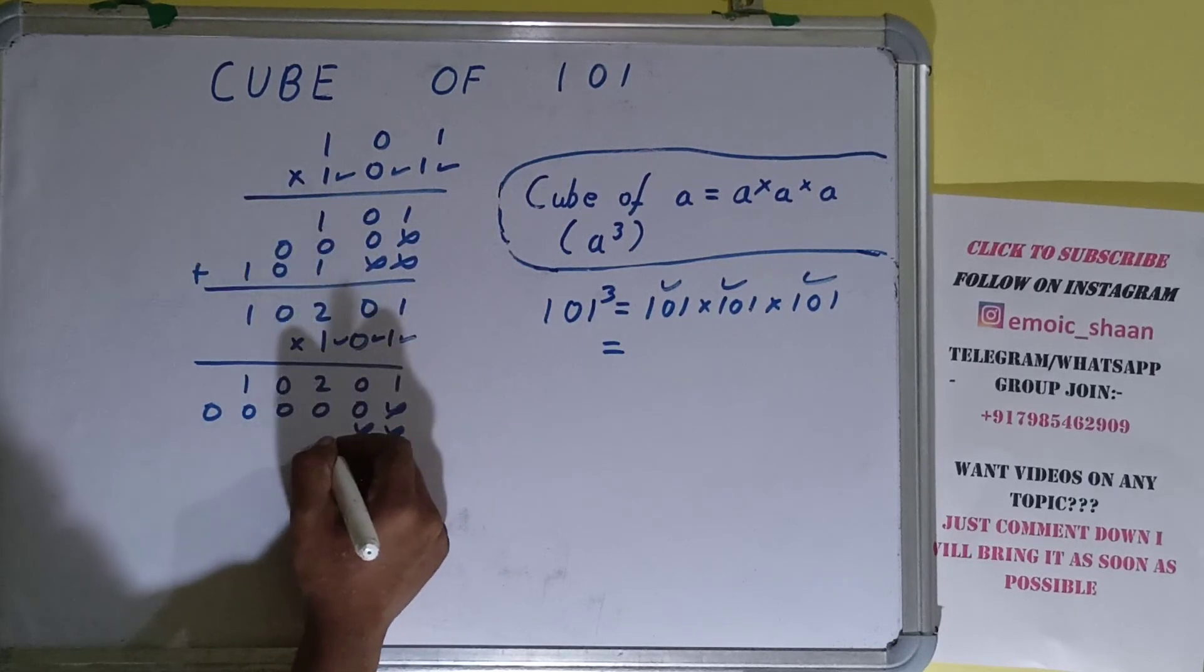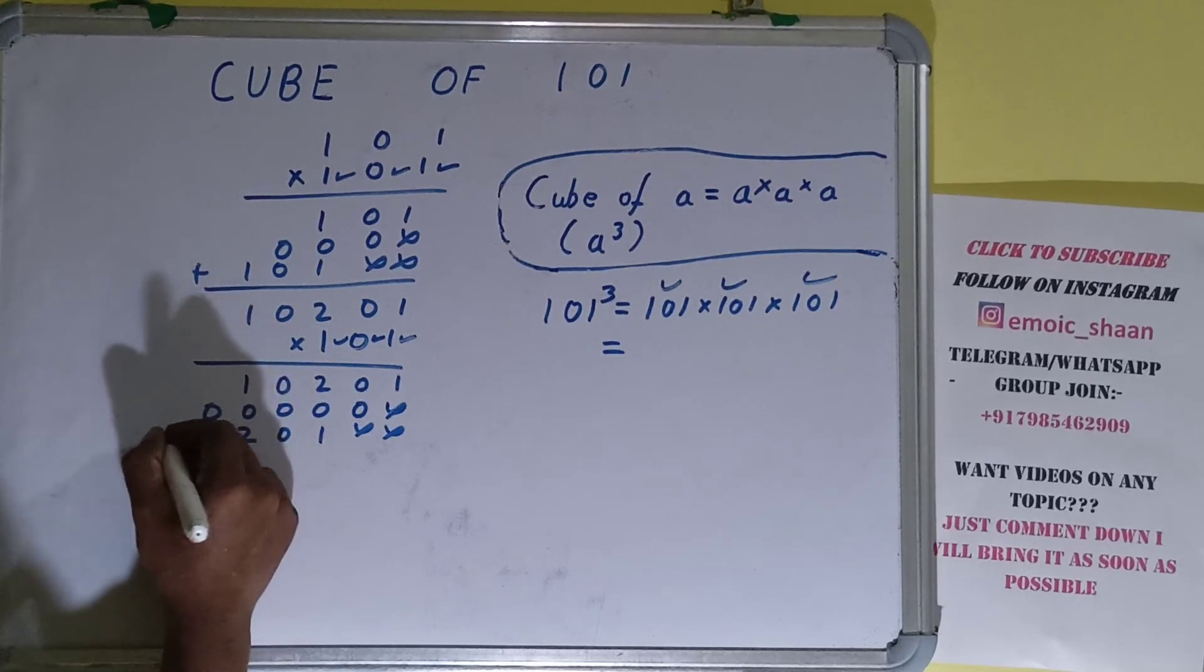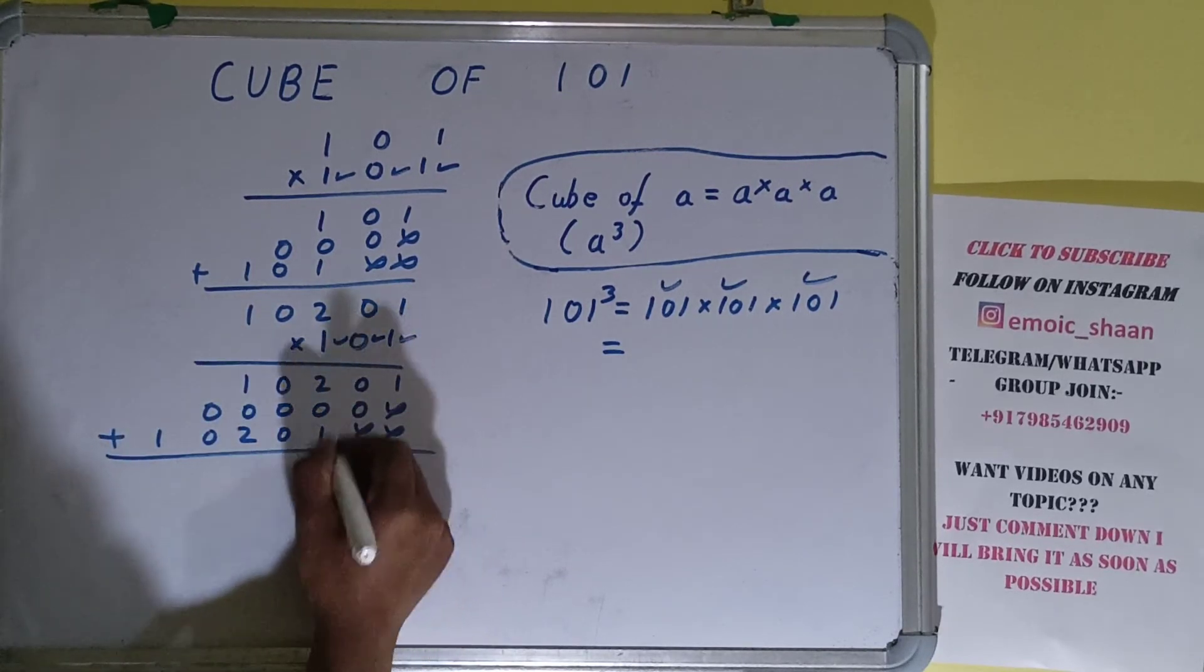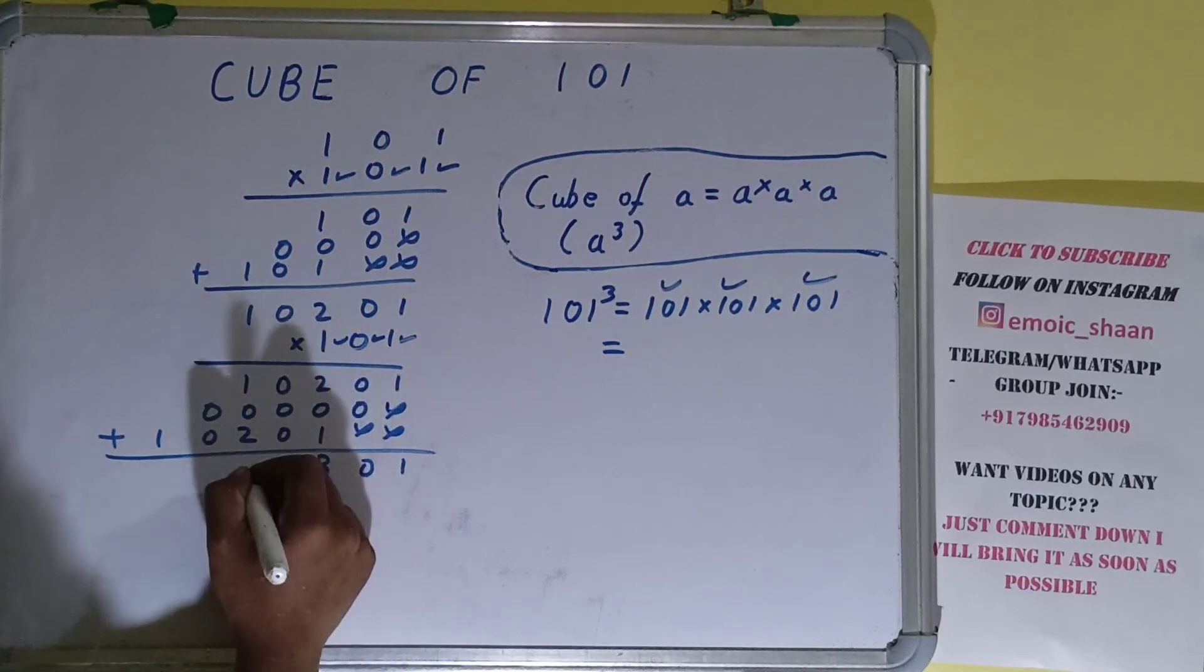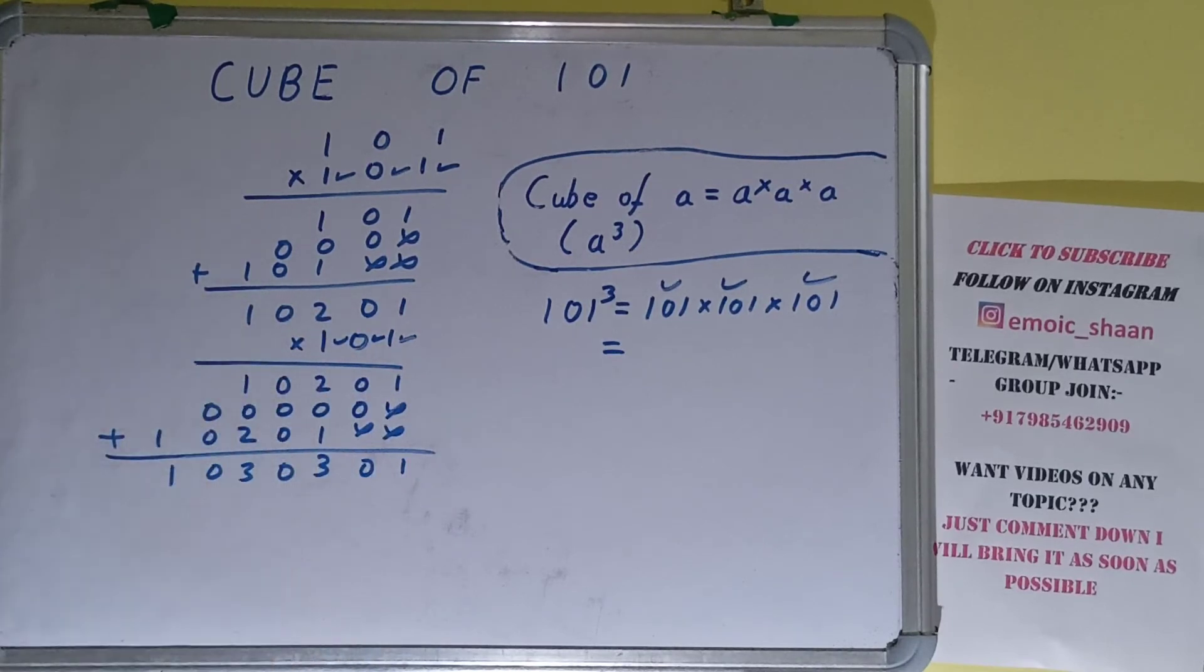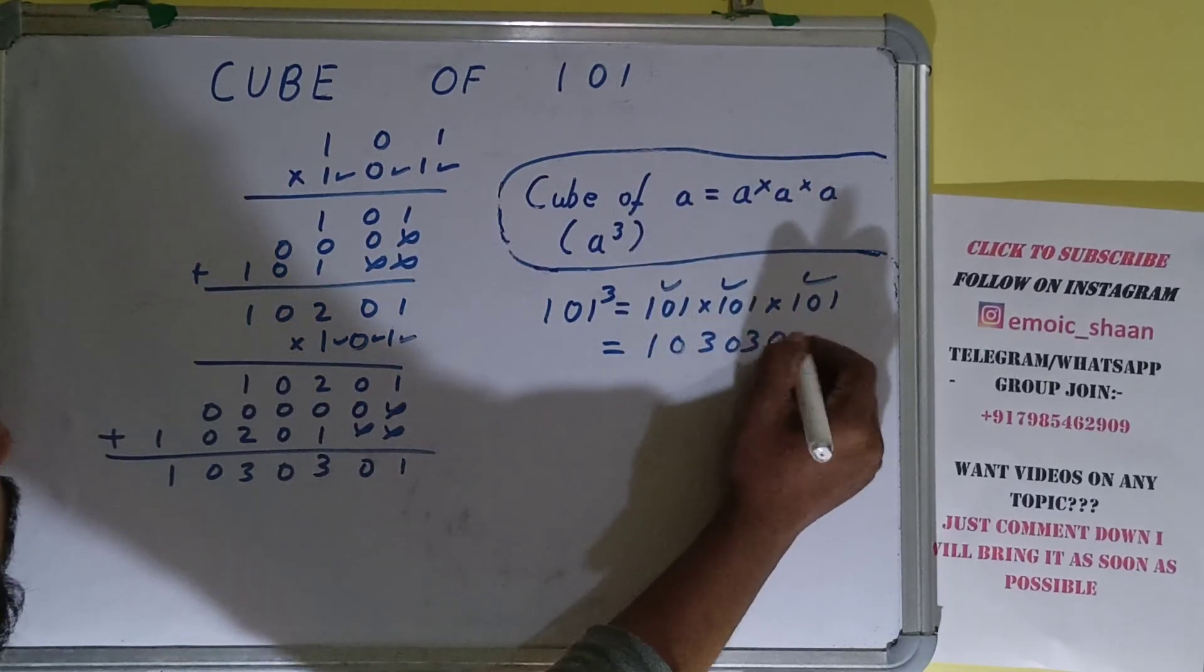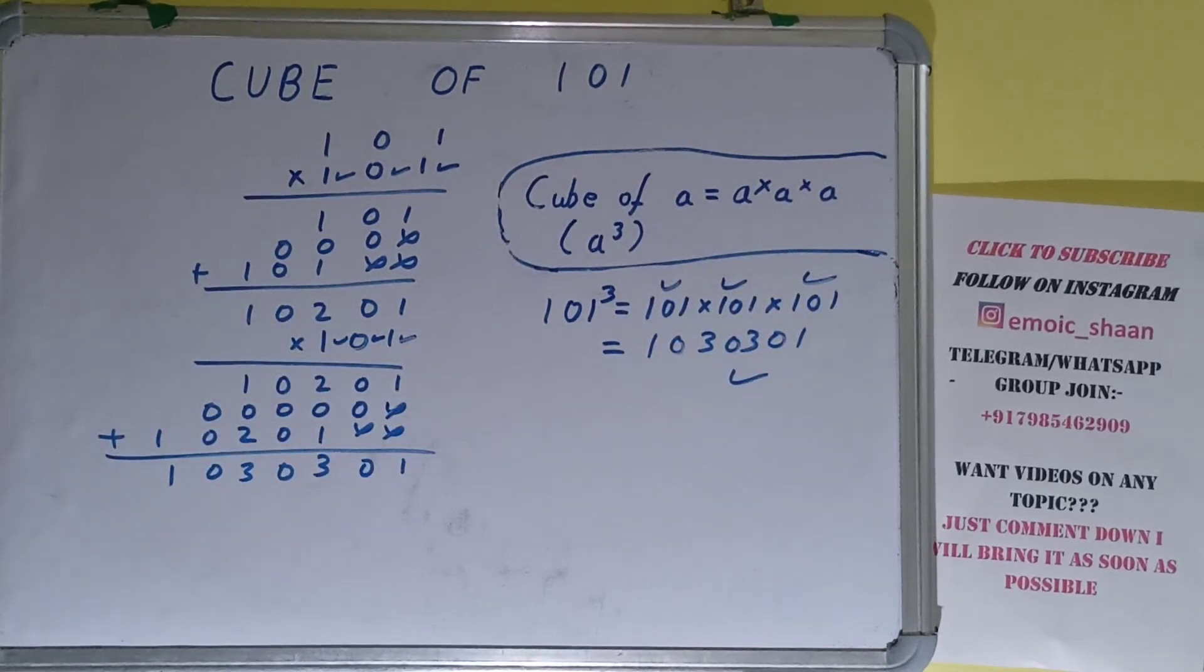And for this one we can just copy the upper row again 1-0-2-0-1. Just add all, this will be 1, this will be 0, this will be 3, this will be 0, and this will be 1. So the answer will be 1030301, that will be cube for the number 101.